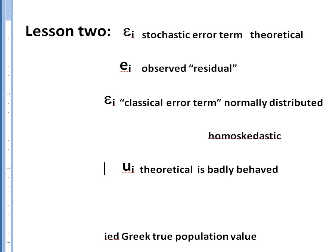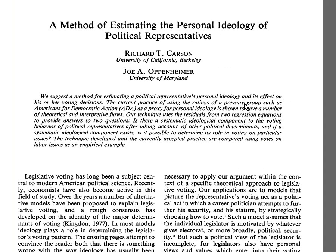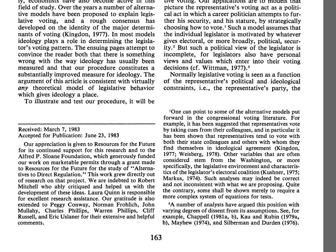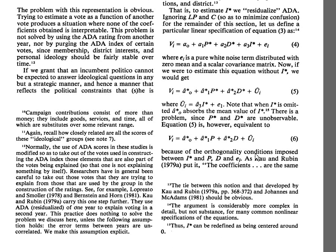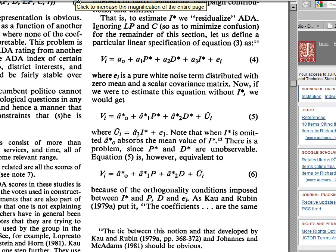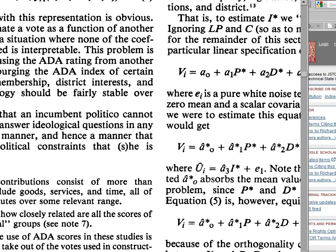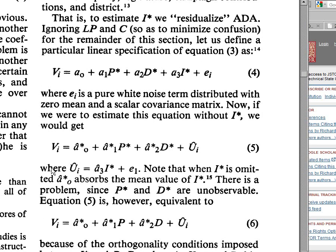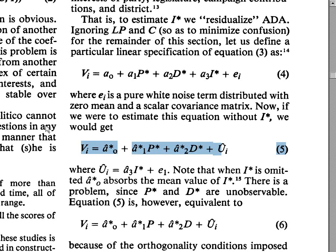Let me give you two quick examples of where people use this notation u to mean it's not really an error term that's nicely behaved, but somebody has done something to the error term to make it this thing that's bad. So let me show you two examples real quickly about this. Okay, here's example number one. This is a paper by Carson and Oppenheimer from 1984 in the American Journal of Political Science called A Method of Estimating the Personal Ideology of Political Representatives.